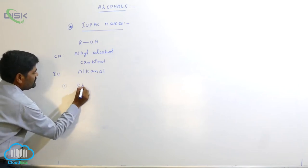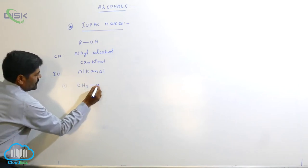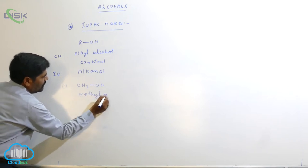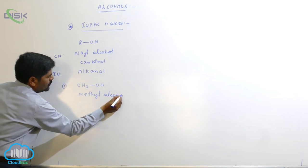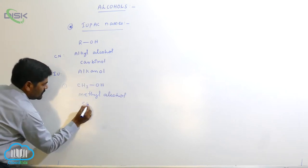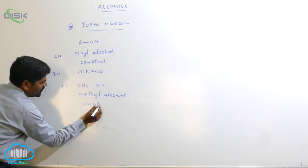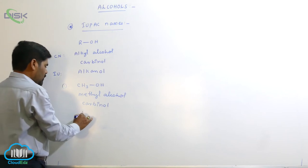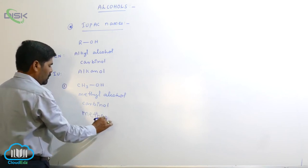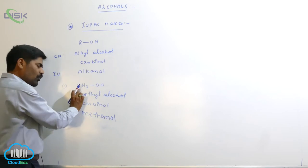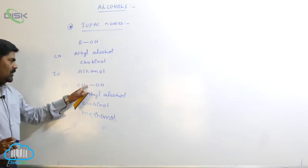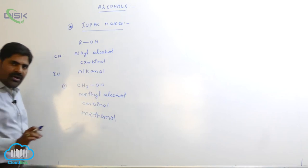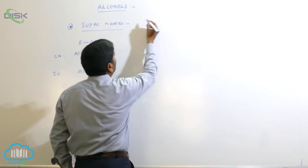Number one: the common name is methyl alcohol. A one-carbon system containing an OH group is known as carbenol. The IUPAC name is methanol, because there is only one carbon — the root word is 'meth', 'an' indicates the saturated system, and 'ol' indicates the functional group.